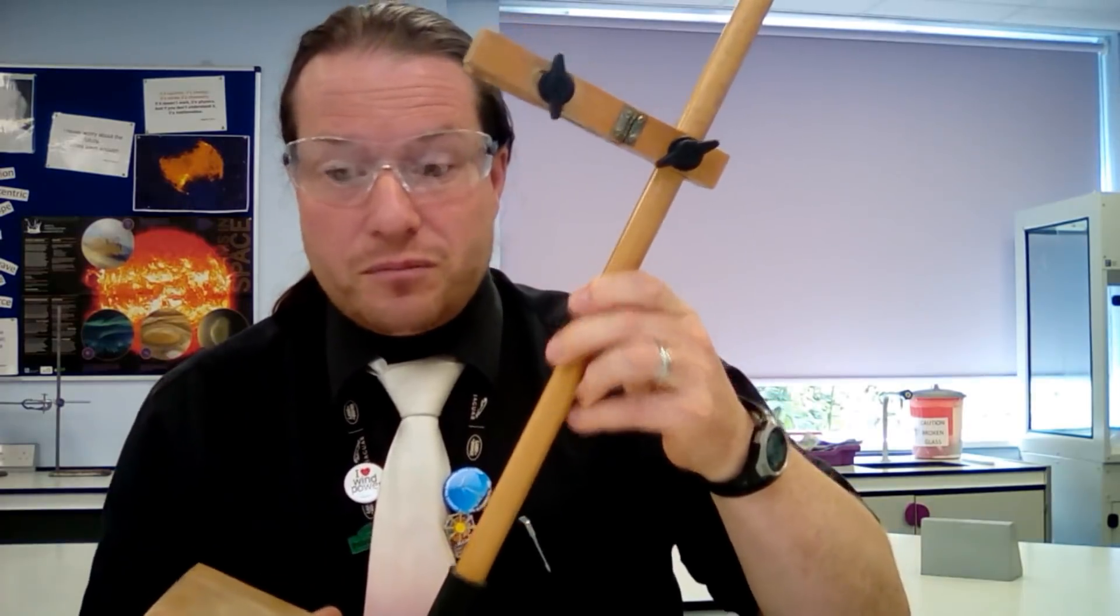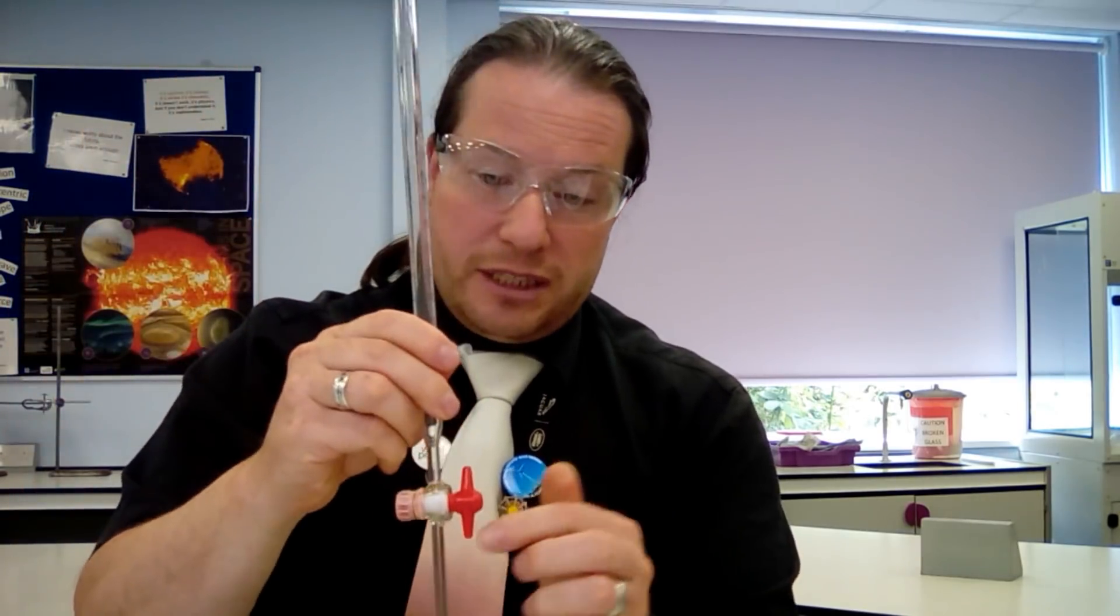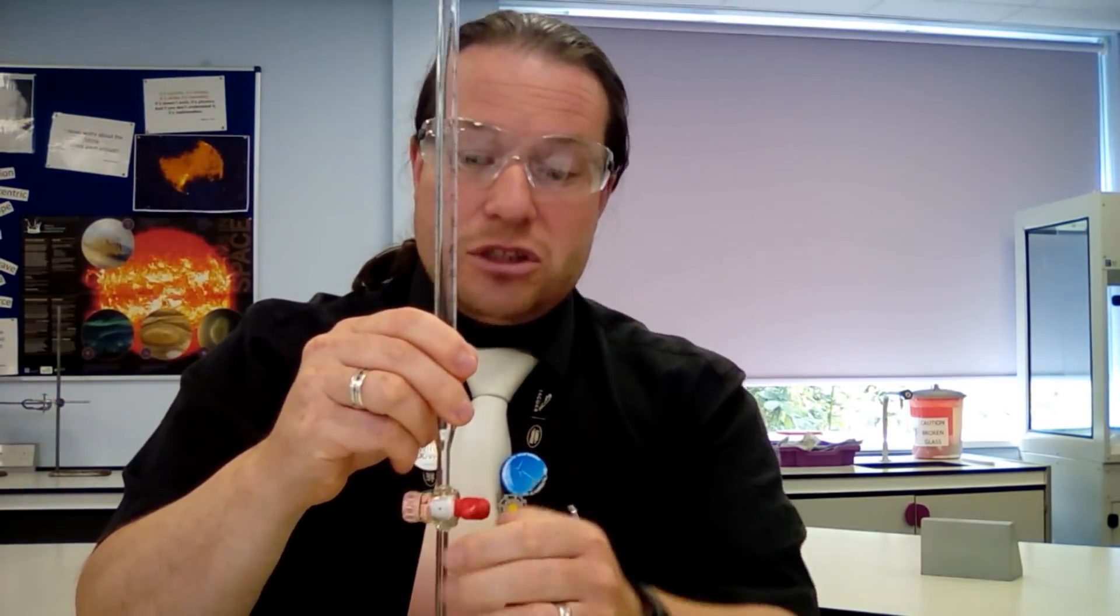We're going to make sure that we wear our safety specs at all times. Equipment that we need: we're going to need a wooden stand, and that wooden stand is going to take our burette. Now a burette is a very accurate measuring device. It has graduations all down here and a tap at the bottom that allows us to control the liquid as it comes out.